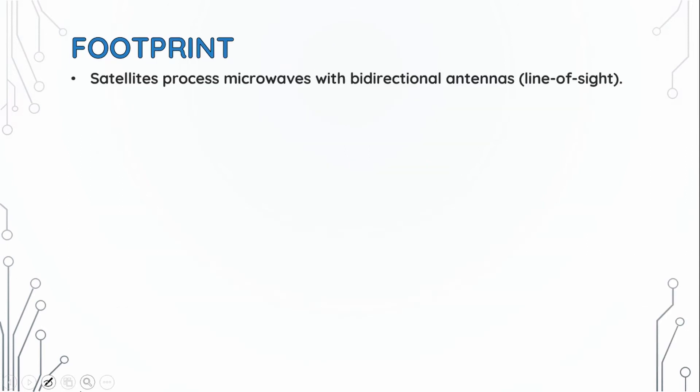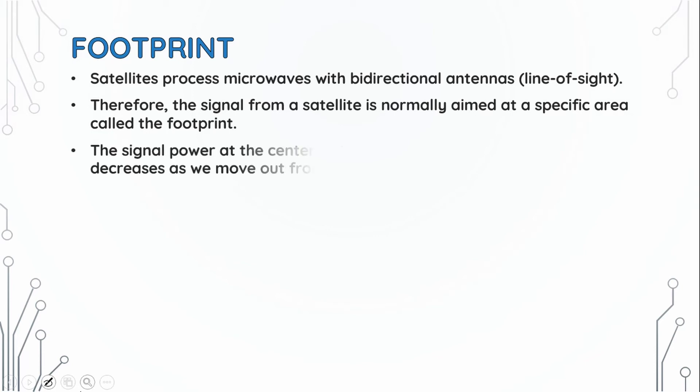Footprint. Satellites process microwaves with bidirectional antennas. Therefore, the signal from a satellite is normally aimed at a specific area called the footprint. The signal power at the center of the footprint is maximum.